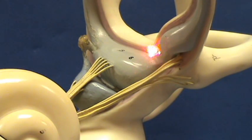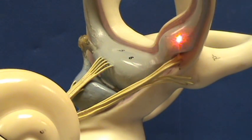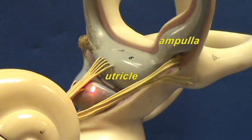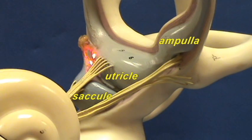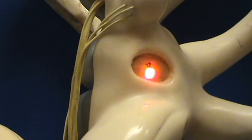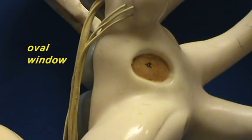Here is another view. Again, we have the membranous labyrinth shown in gray. Here is the ampulla, and you can see it's connected to the utricle and the saccule. You can see how these two ducts are joining — they would form the endolymphatic duct, which again is broken off in this model.